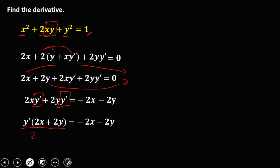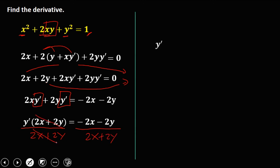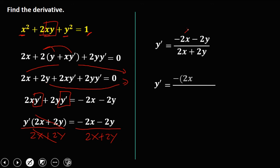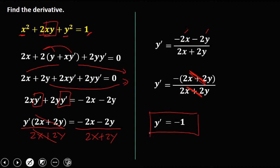Factoring out y prime gives y prime times (2x + 2y) equals negative 2x minus 2y. Dividing both sides by (2x + 2y), we get y prime = negative 2x minus 2y over (2x + 2y). Observing the numerator, we can factor out a negative: negative (2x + 2y) over (2x + 2y). The (2x + 2y) terms cancel, so y prime equals negative 1. This is the final derivative.